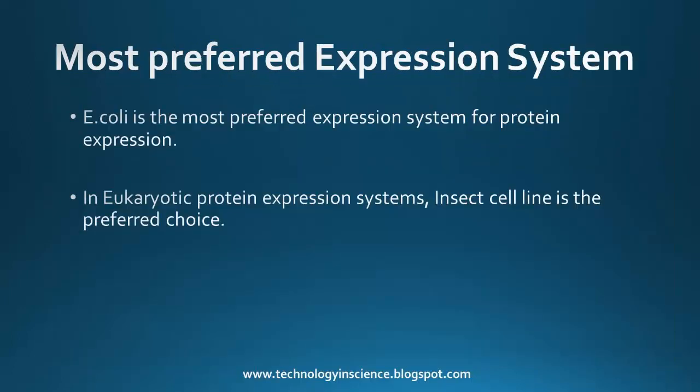Of the systems discussed, E. coli is the most preferred expression system for protein expression. Whereas in eukaryotic protein expression systems, insect cell is the preferred choice.